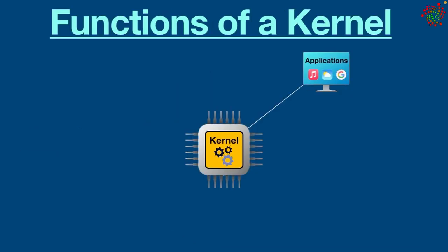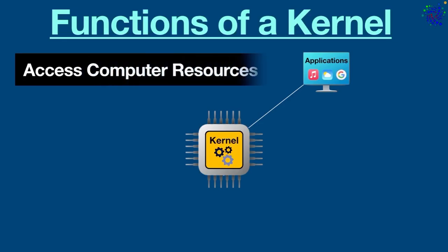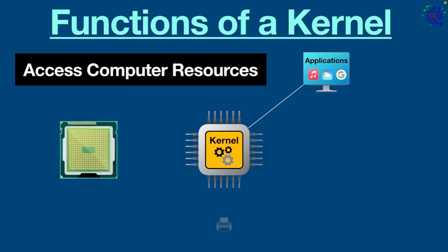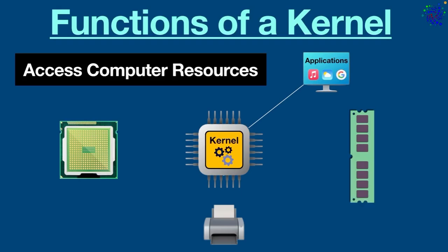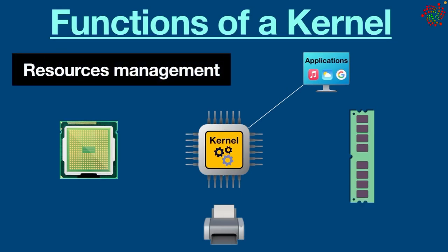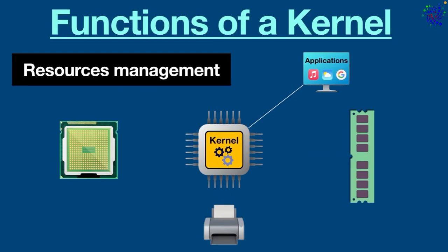Now let's talk about the functions of a kernel. First, accessing computer resources: the kernel can access various computer resources such as CPU, input/output devices, memory, and so on. Second, resource management: it is the duty of the kernel to share resources between various processes and make sure each process uniformly accesses the resource.